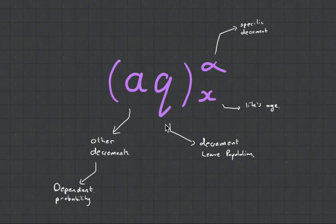This guy's quite interesting. What it is it's a new notation and this is saying this is a dependent probability and the A lets you know that there are other decrements so you can see it's dependent probability. The symbol Q shows that it's a decrement that you're leaving the population. X refers to the person's age and alpha refers to the specific decrement.